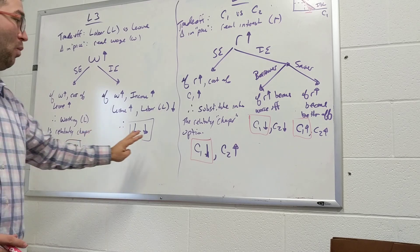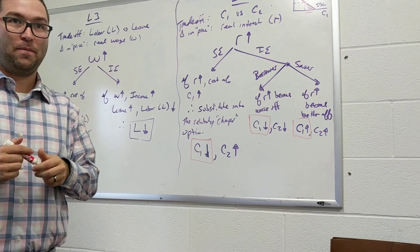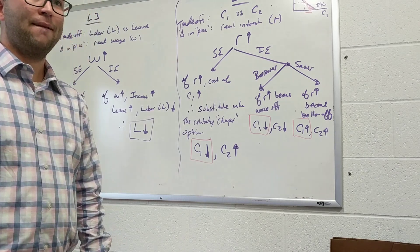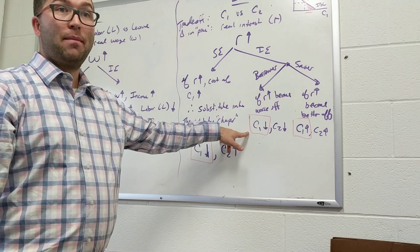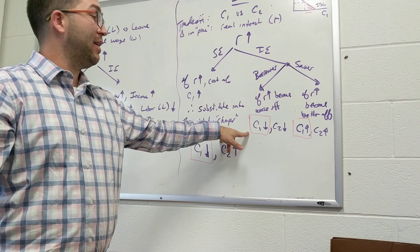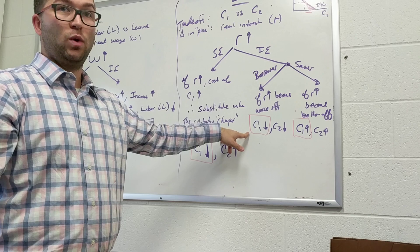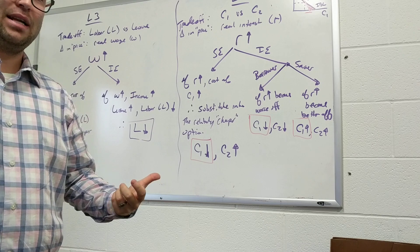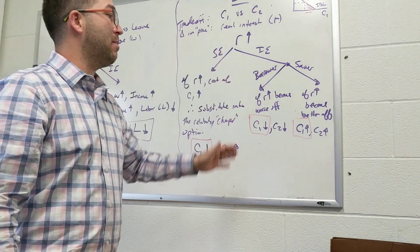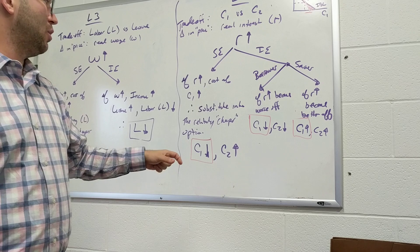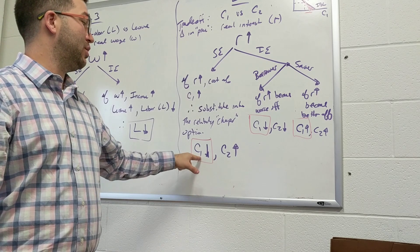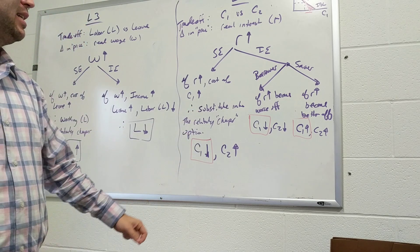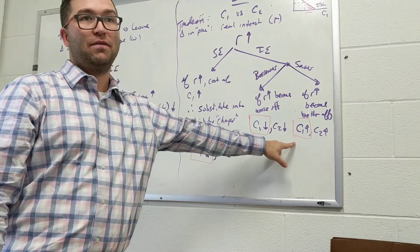For a borrower, since C1 goes down for both substitution and income effects, it's like tug of war with everyone on one side — C1 definitely decreases regardless of which effect dominates. For a saver, it matters which effect dominates. If the interest rate goes up and a saver's consumption goes down, the substitution effect dominates. If the interest rate goes up and consumption actually increases for a saver, then the income effect must have dominated.